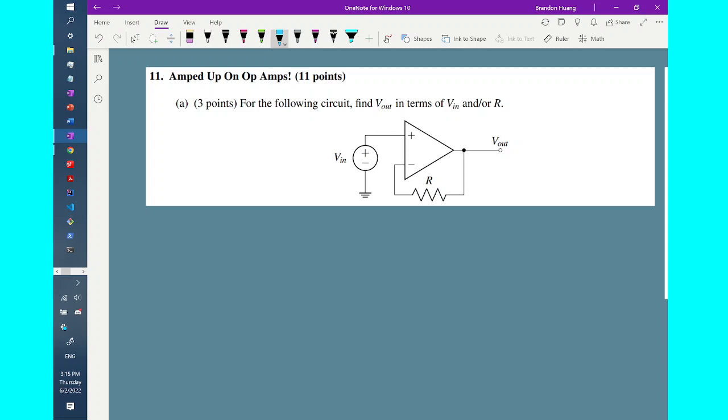So first of all, we want to see whether the op-amp has negative feedback, because if it does, then it makes a lot of things easier. So let's try. Let's first say that there is a current across R going from the right to the left, and I'll call it i_R.